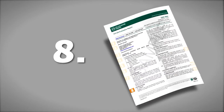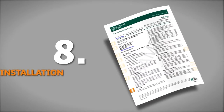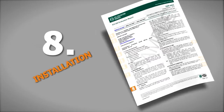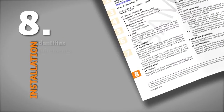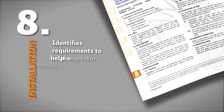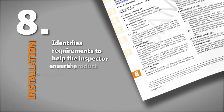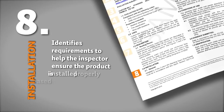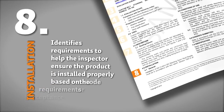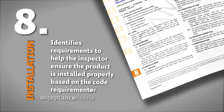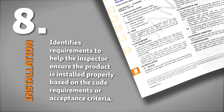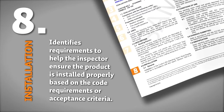8. Installation. This section identifies general and often specific requirements to help the inspector ensure the product is installed properly, based on the code requirements or acceptance criteria.